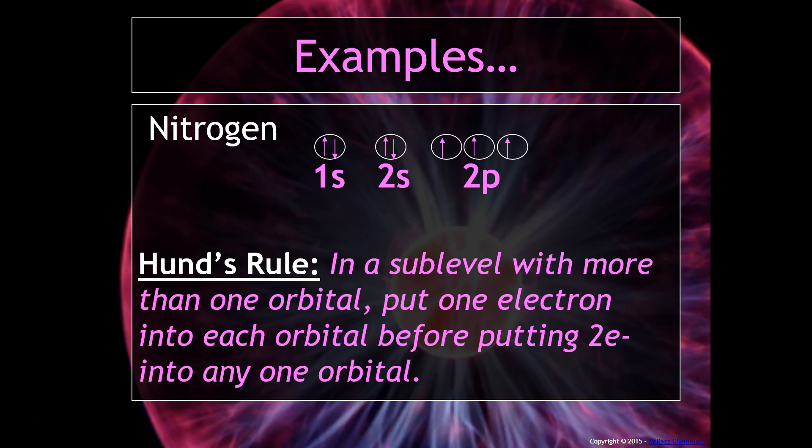Well that's another kind of rule for our electron configurations and orbital notations. This is called Hund's rule.